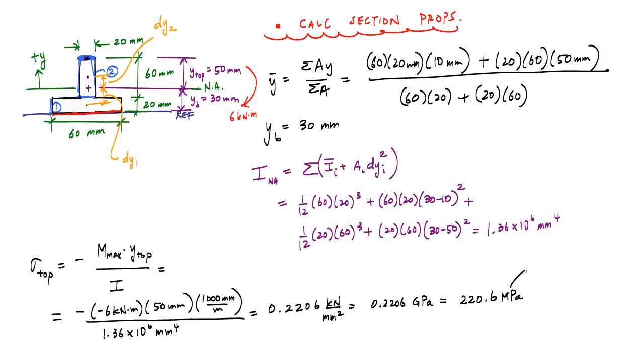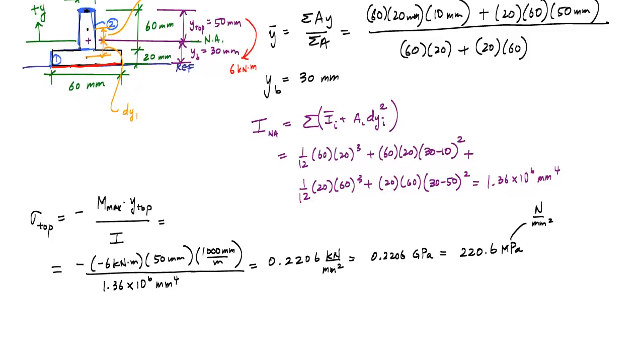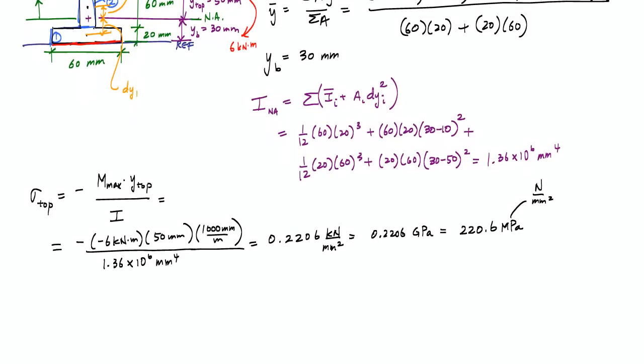This is also newtons per millimeter squared in case you needed a refresher on units. It's really convenient to keep things in kilonewtons and millimeters and newtons and millimeters. The positive stress result indicates that this top location is indeed in tension.